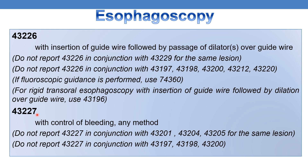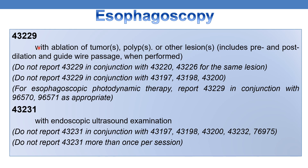CPT 43227 deals with esophagoscopy, flexible, transoral, with control of bleeding, any method. CPT 43229 deals with esophagoscopy, flexible, transoral, with ablation of tumor, polyp, or other lesion, including pre- and post-dilation and guide wire passage when performed. CPT 43231 deals with esophagoscopy, flexible, transoral, with endoscopic ultrasound examination. Do not report 43231 more than once per session.